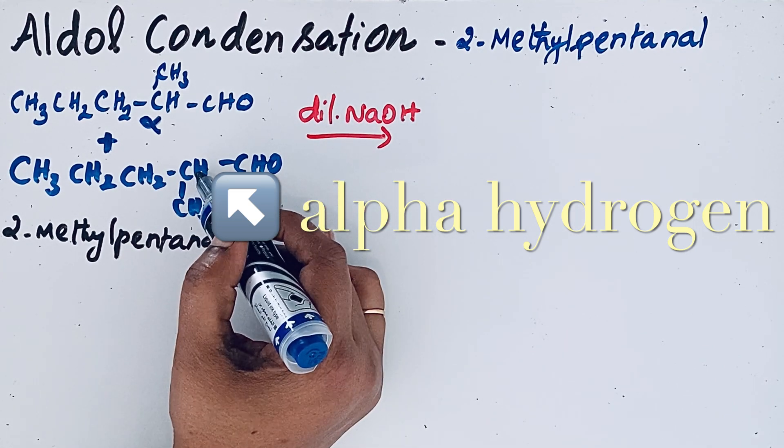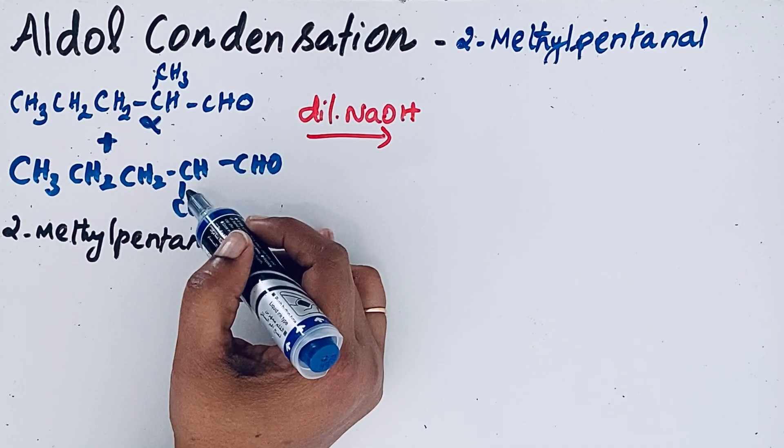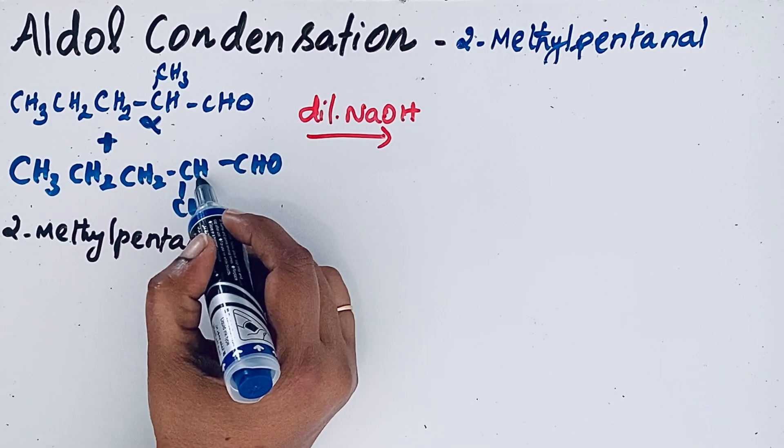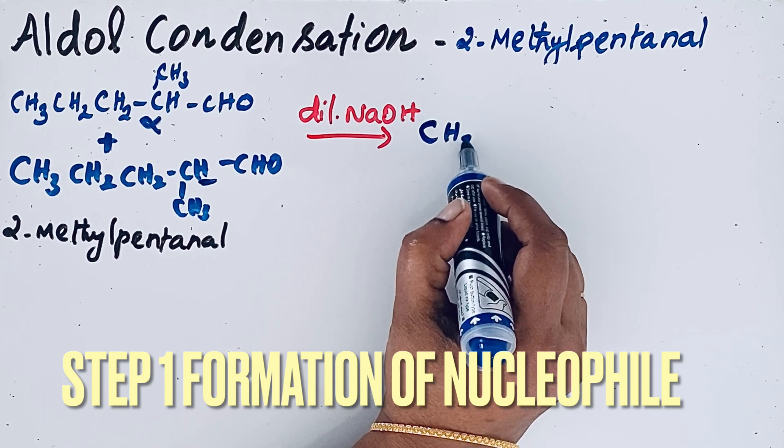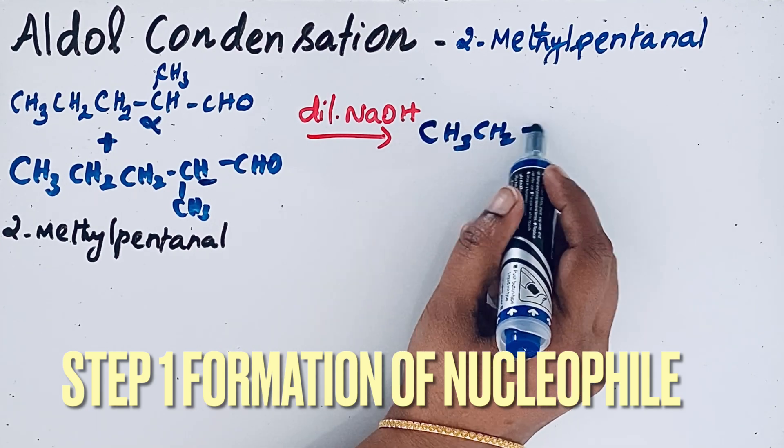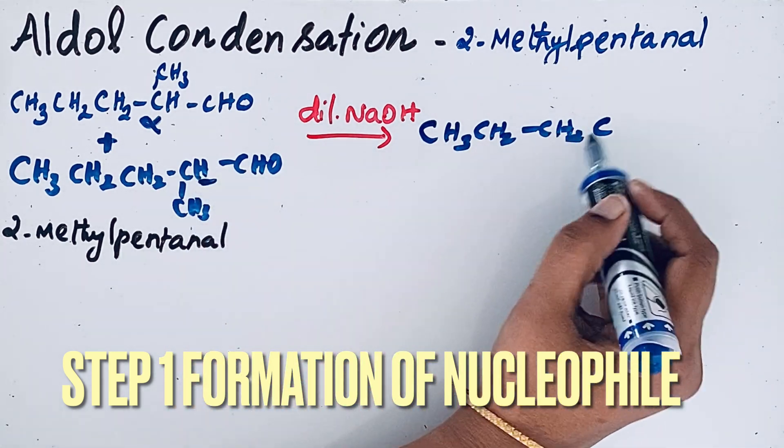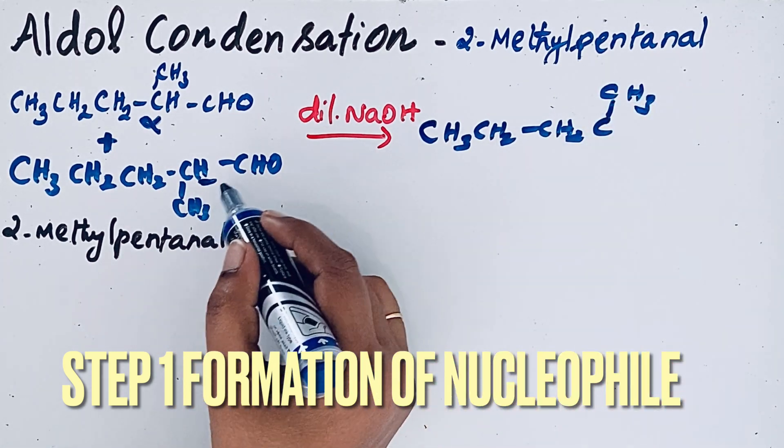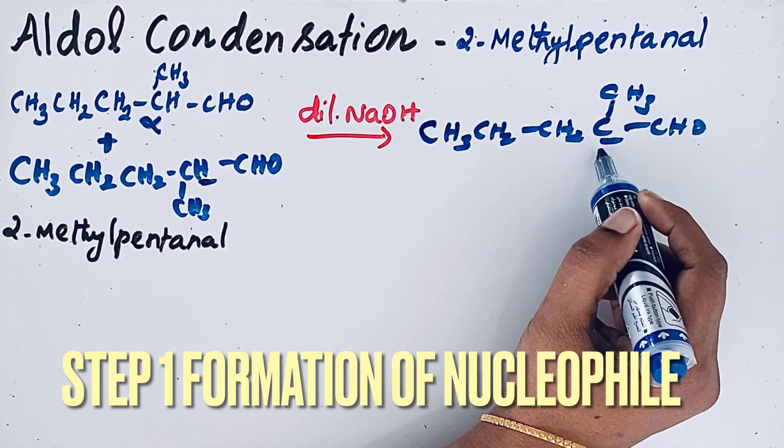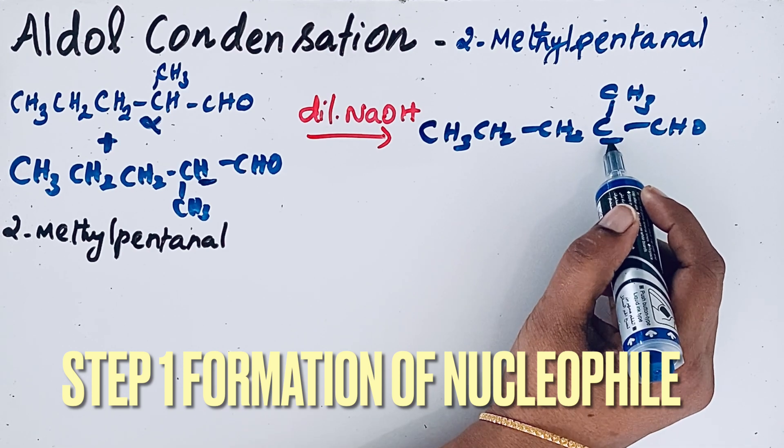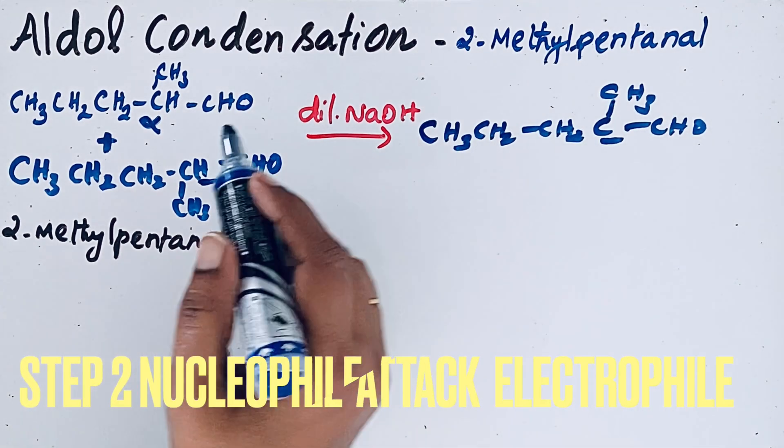This alpha hydrogen is very acidic in nature, so this will be removed, resulting in the formation of... So we can write for that one molecule, CH3-CH2-CH2-C(CH3)-CHO. Then this hydrogen is lost. So because of that, this carbon acquired now negative charge. That means it is a carbanion. It acts like a nucleophile.